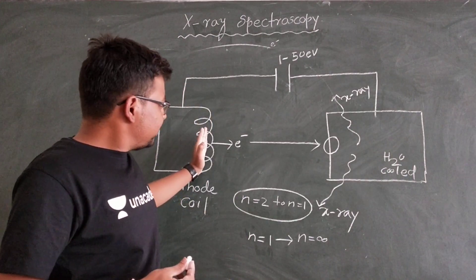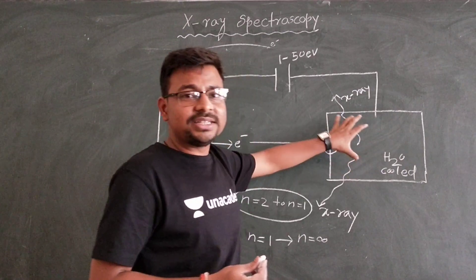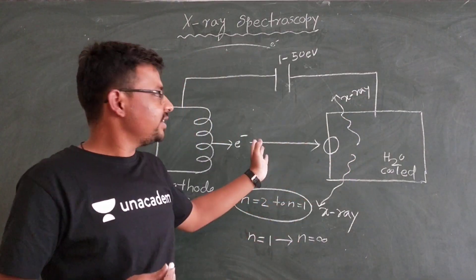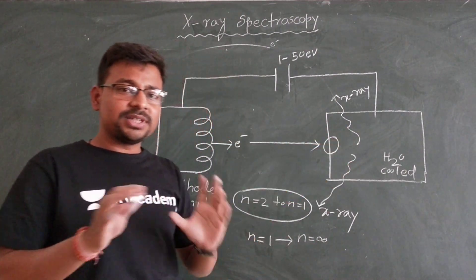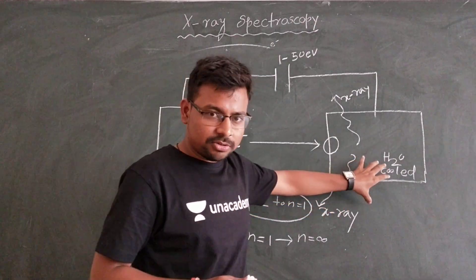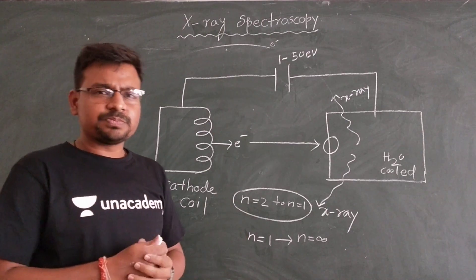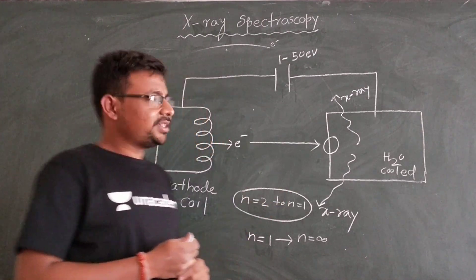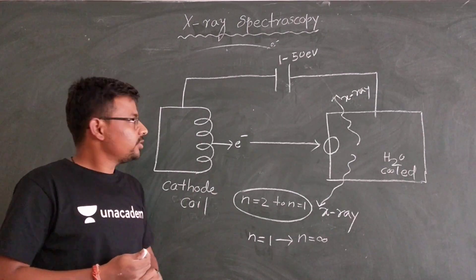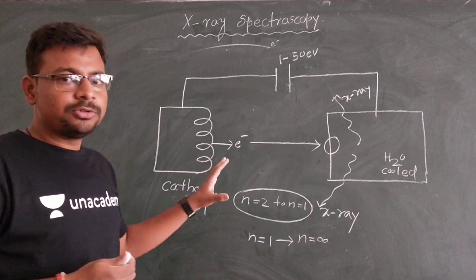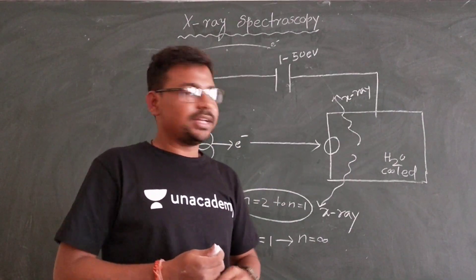Because we are using a high energetic electron beam, it creates instability in the target material — it heats up, raising the temperature of the target material and making it unstable. So the target material must be water-cooled so that the temperature is maintained properly. In this way, X-rays are generally generated in X-ray spectroscopes. This was all about the origin of X-ray and how to generate X-ray instrumentally.